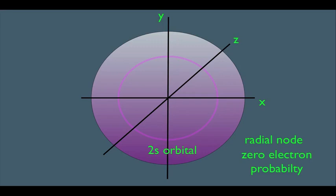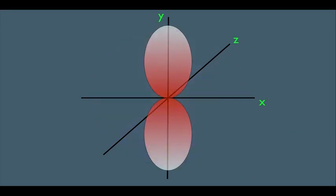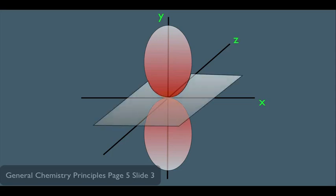I'd also like you to know that nodes are possible when it comes to p orbitals. The node for the p orbital looks like this, and it's called simply a nodal plane. What we're seeing here is that in this plane of space, we expect to not find any electrons.